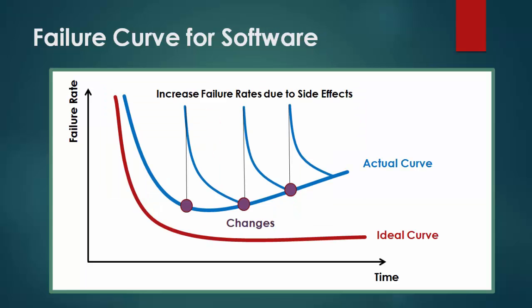On the other hand, for software it is difficult to maintain stable designs. As time goes by, the customer expects the software to be changed for their needs, because software is just a piece of written code. As changes are made, it is likely that errors will be introduced, causing the failure rate curve to spike as shown in the actual curve. Before the curve can return to the original steady-state failure rate, another change is requested, causing the curve to spike again. Slowly, the minimum failure rate level begins to rise — we call this deterioration. So, software doesn't wear out like hardware but deteriorates due to change.